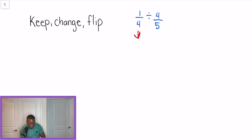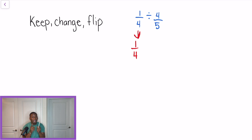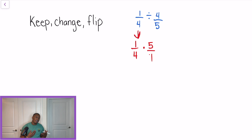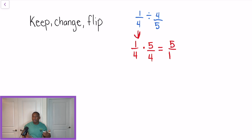What this rule is saying is our first fraction we are going to keep the same. So when I have 1 over 4 divided by 4 over 5, we keep 1 over 4 the same, we change the division sign to a multiplication, and then when we talk about the flip, we're talking about that second fraction. So instead of 4 over 5, we take the reciprocal and it becomes 5 over 4. Then we multiply our fractions and we'll get 5 over 16.